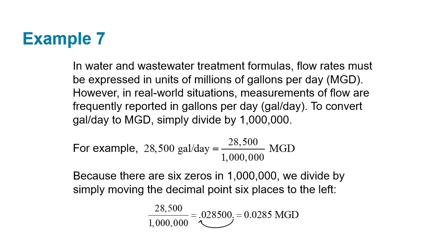Our last example, we've got water and wastewater treatment formulas. Flow rates must be expressed in units of millions of gallons per day, so MGDs. However, in real-world situations, measurements of flow are frequently reported in gallons per day. So to convert gallons per day to millions of gallons per day, it's pretty simple. You just have to divide by a million. So for instance, we've got 28,500 gallons per day. We divide that by 1 million, we get 0.0285 millions of gallons per day. It's kind of silly, but that's what they would want in this kind of setting. All right, that's all I have for you. Let's go. Thank you.